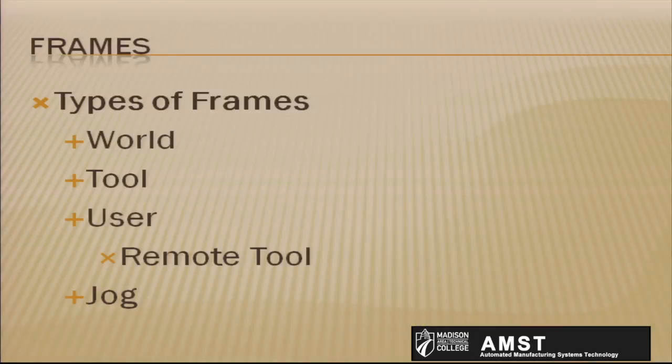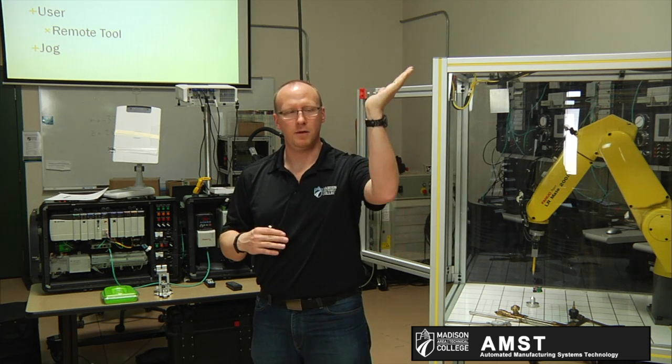Then we have the tool frame — that's your tool center point, your TCP, your main point of interest. We also have the jog frame and a remote tool center point. Jog frame allows jogging to be easier, and the remote tool center point is an add-on you can use if you do some deburring or grinding operations, when your main point of interest is not in the robot but, for example, a grinding wheel that you have to rotate around.